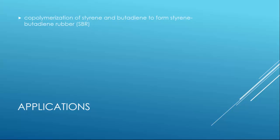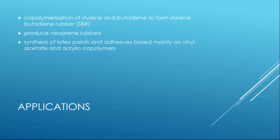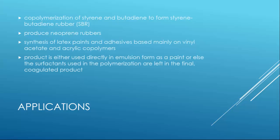So what are some of the applications that we utilize for emulsion polymerization? In the industry, this emulsion polymerization is employed in the co-polymerization of styrene and butadiene. Recall where is it? Styrene butadiene? In the formation of the styrene butadiene rubber, SBR. It's also used in the polymerization of chloroprene to produce neoprene rubbers, like the one that's used to make gloves. And the synthesis of latex paints and adhesives, that's based mainly on the vinyl acetate or acrylic co-polymers. Now this product is then used directly in emulsion form as paint, or else the surfactants used in the polymerization are left in the initial coagulated product.